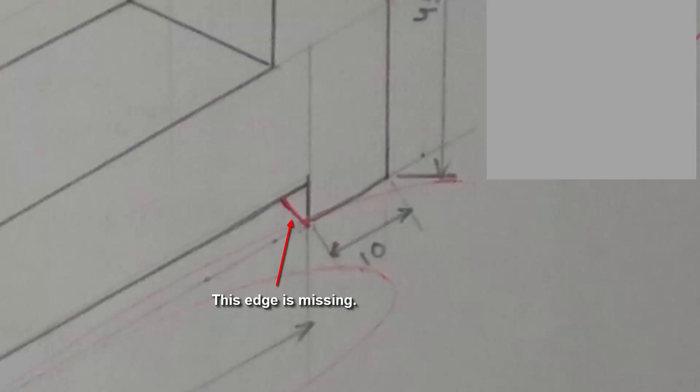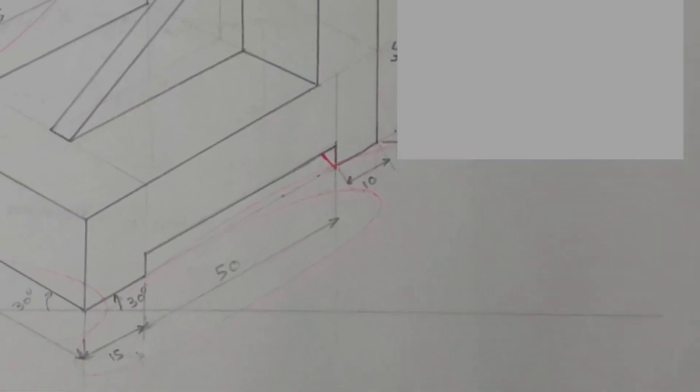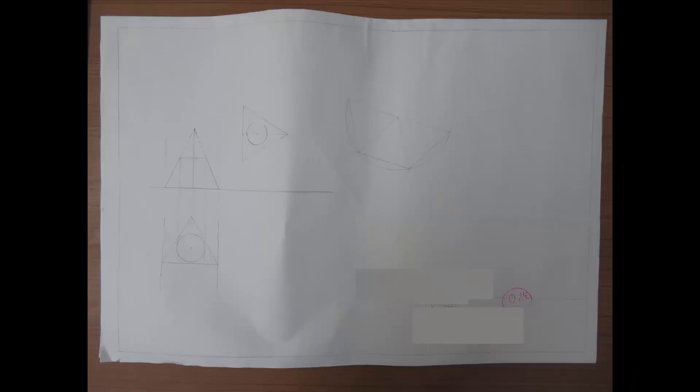This edge was missing in this drawing. This is an edge which runs parallel underneath. The title block is poorly done in this drawing.